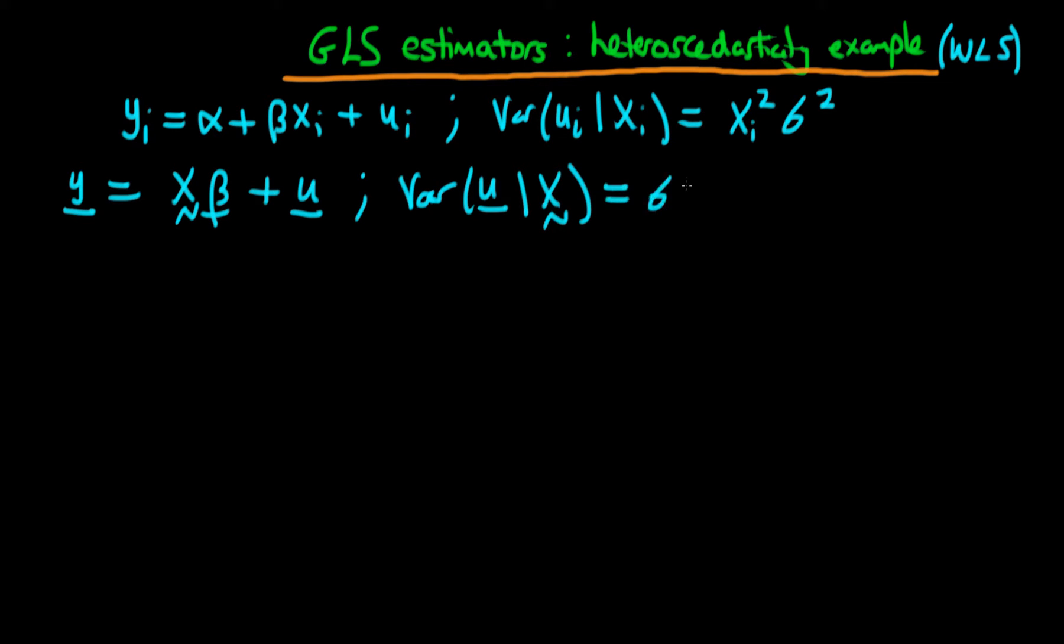That's just equal to sigma squared times omega, where omega here is just a diagonal matrix, which has diagonal components x1 squared through xn squared, and off-diagonal components given by 0. So this is our particular setup.